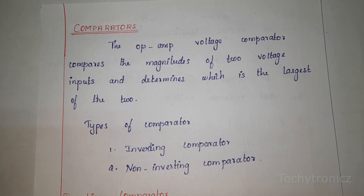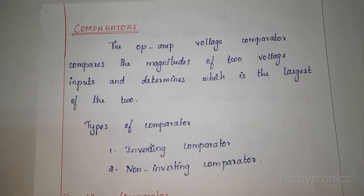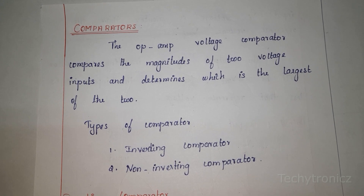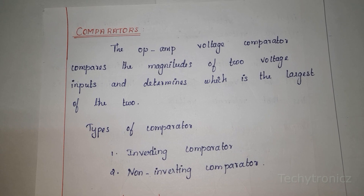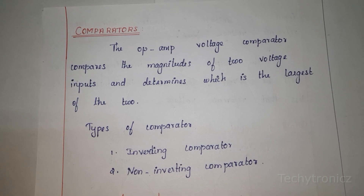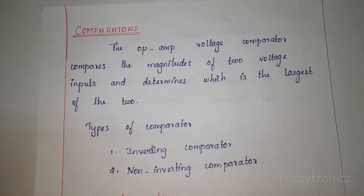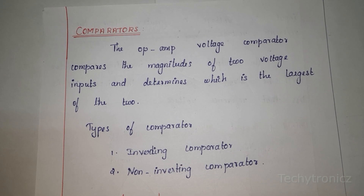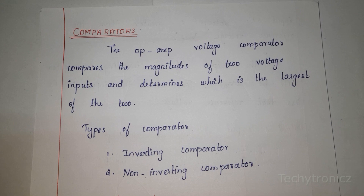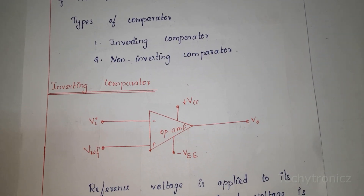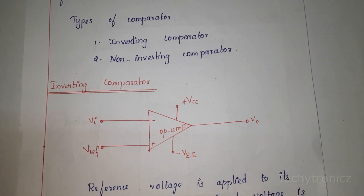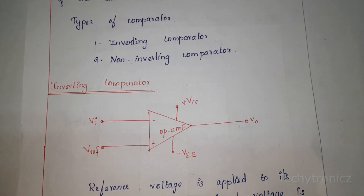Now let's see the types of comparators. There are two types: one is the inverting comparator and another one is the non-inverting comparator. First we will discuss about the inverting comparator. This is the circuit diagram of the inverting comparator.